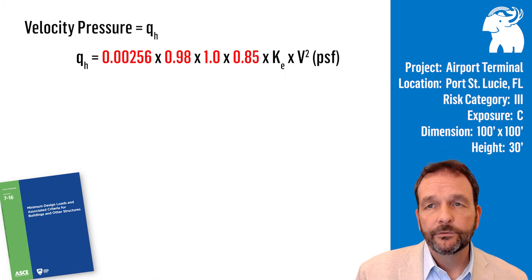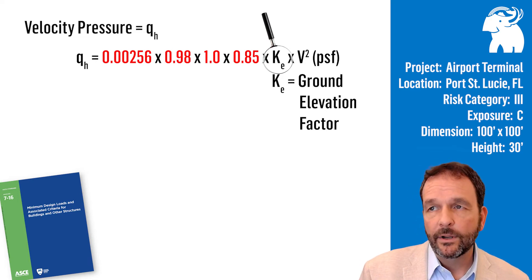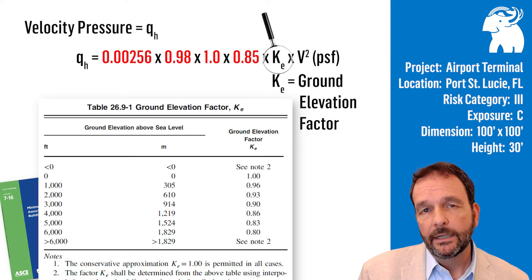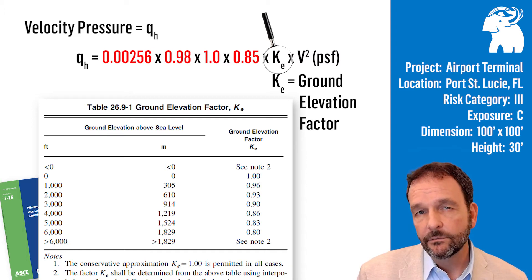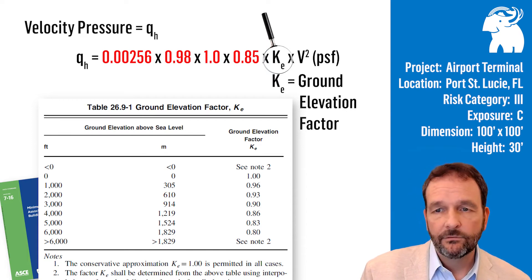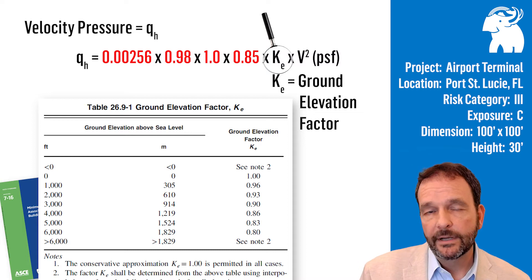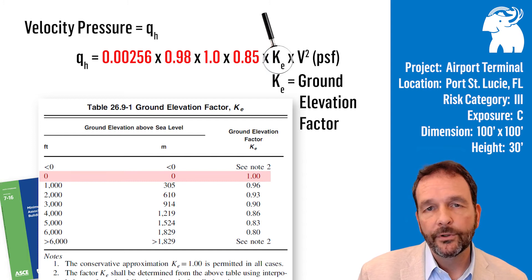A new variable to ASCE 7-16 is K sub E, a ground elevation factor. It's based on the ground elevation above sea level. This elevation factor adjusts for the air density above sea level. At sea level, it's simply 1.0, but the higher your building is above sea level, that variable K sub E is lower and will affect the velocity pressure. The higher elevation, the lower the velocity pressure. In our example, it's 1.0 because we're in Florida, located near sea level.